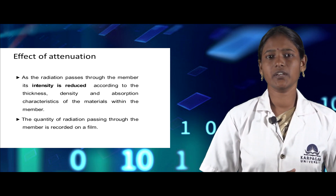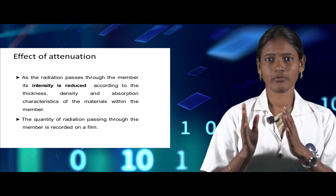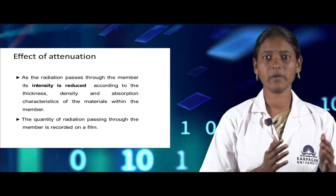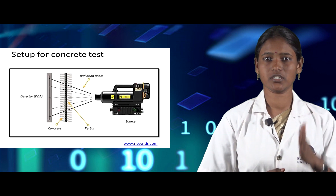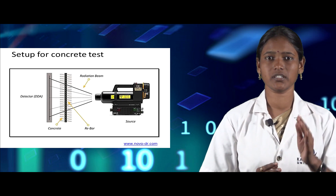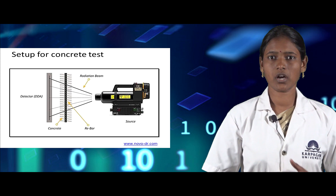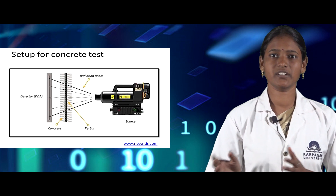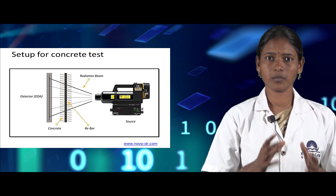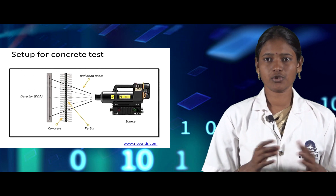The radiography setup consists of a source that produces a radioactive beam, which passes through the concrete containing steel reinforcement and is absorbed in a detector. Cracks and voids absorb less radiation and therefore show up as dark zones on the film.